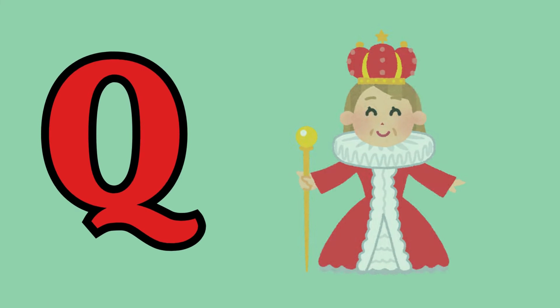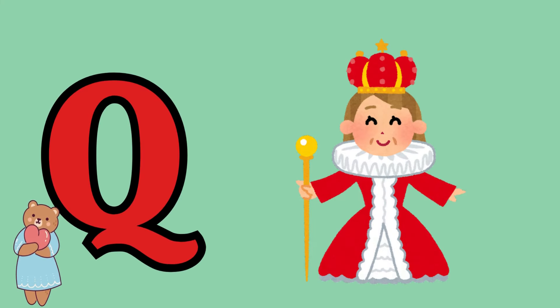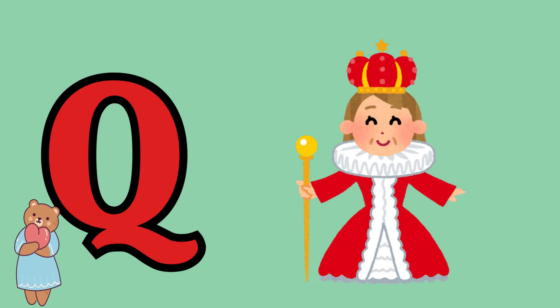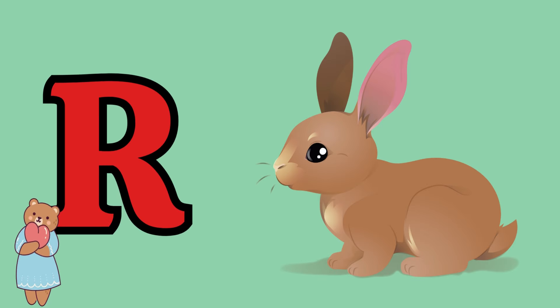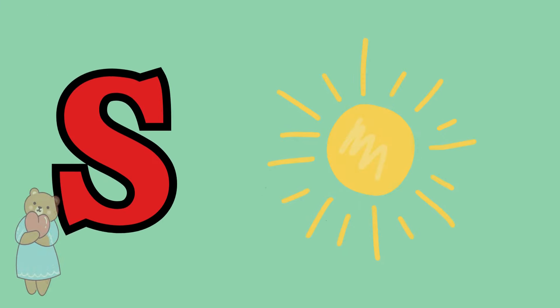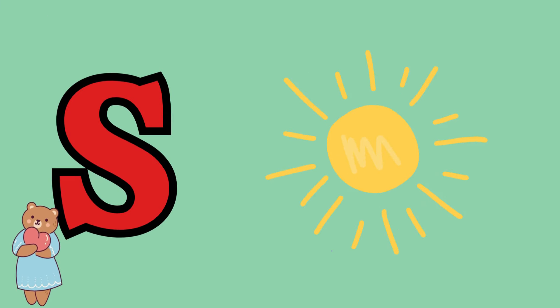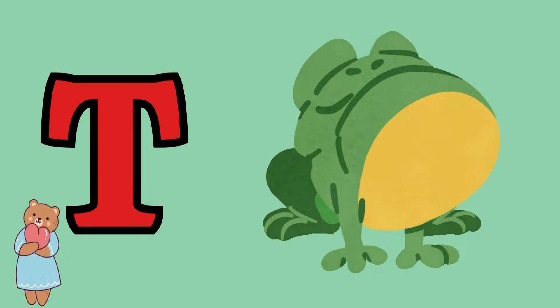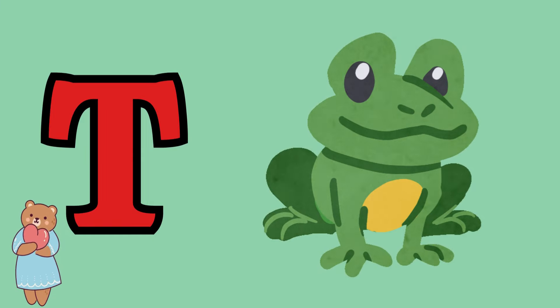Q is for queen, qu-qu-queen. R is for rabbit, r-r-rabbit. S is for sun, s-s-sun. T is for toad, t-t-toad.